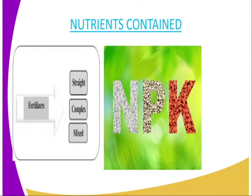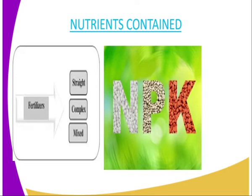A compound fertilizer is one that contains either two or three primary macronutrients. Primary macronutrients include nitrogen, phosphorus, and potassium. A straight fertilizer, on the other hand, is the type of fertilizer that contains only one primary macronutrient.